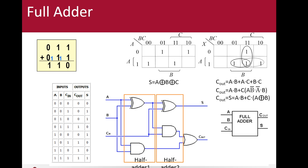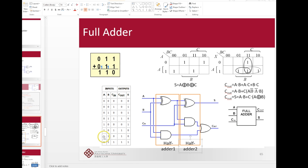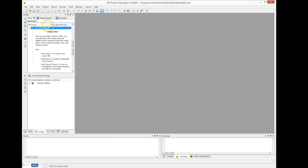And the output is the sum and the carry-out. We can see the truth table and the minimized expression of the two. So we're going to create this full adder using Xilinx ISE.